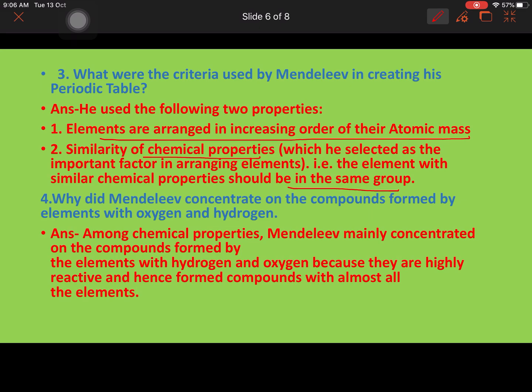Fourth question: why did Mendeleev concentrate on the compounds formed by elements with oxygen and hydrogen? Answer: Among chemical properties, Mendeleev mainly concentrated on compounds formed by elements with hydrogen and oxygen because they are highly reactive and hence formed compounds with almost all the elements.